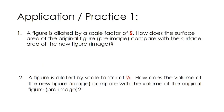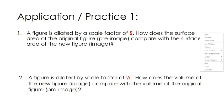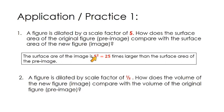Here's our level one problem. A figure is dilated by a scale factor of five, meaning every dimension on the new figure is five times greater than those of the original. How does the surface area of the original figure — the pre-image — compare with the surface area of the new figure — the image? You might be tempted to say the new surface area would be five times greater than the original, but that is not the case. You have to square that scale factor, so the surface area of your new figure, the image, is going to be 25 times larger than the surface area of the pre-image.